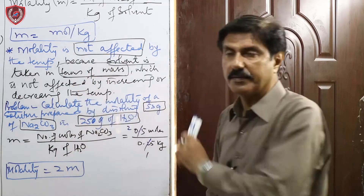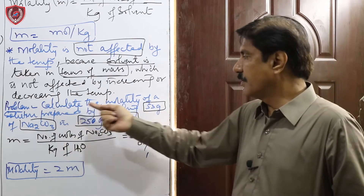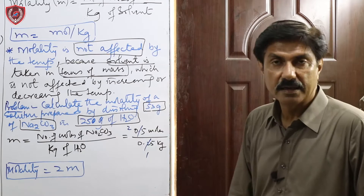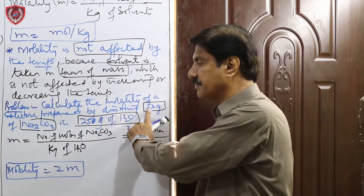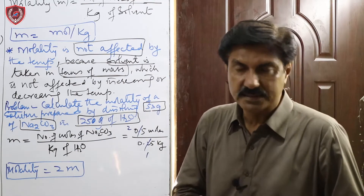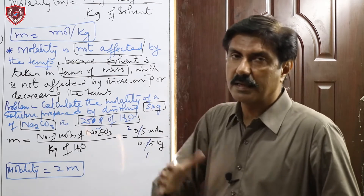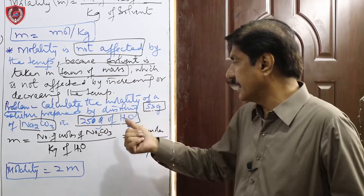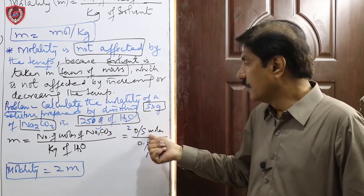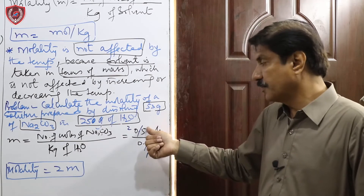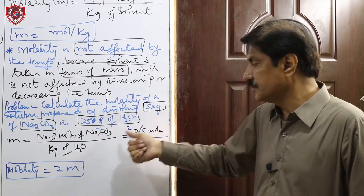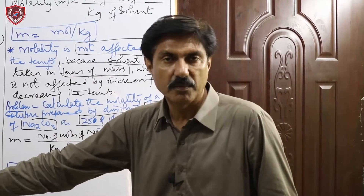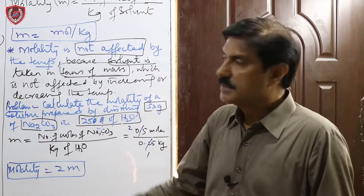Molality problem: 53 grams of sodium carbonate dissolved in 200 grams of water — find molality. Molar mass of Na₂CO₃ = 106 g/mol; so 53 g = 0.5 moles. 200 g water = 0.2 kg. Molality = 0.5 / 0.25 = 2 mol/kg. So the molality of this solution is 2 m. Chapter 7 lecture aage next topic: hydration.